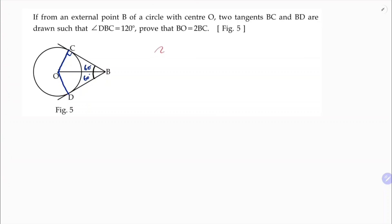Now see, in triangle BOC, in triangle BOC, this is theta—the angle is 60 degrees. I need BO and BC.